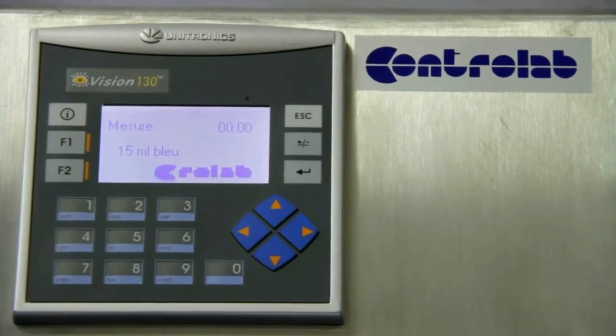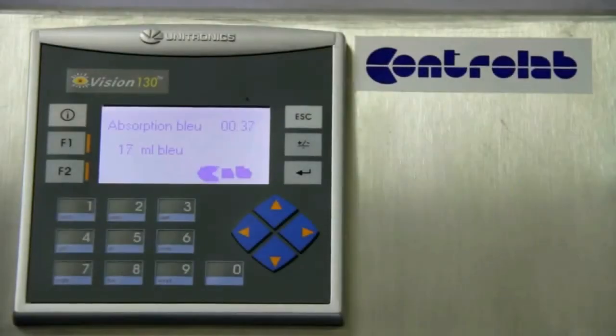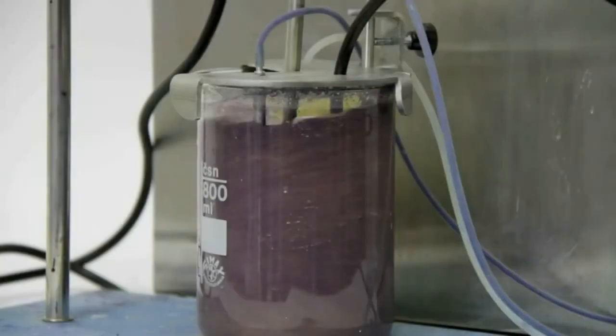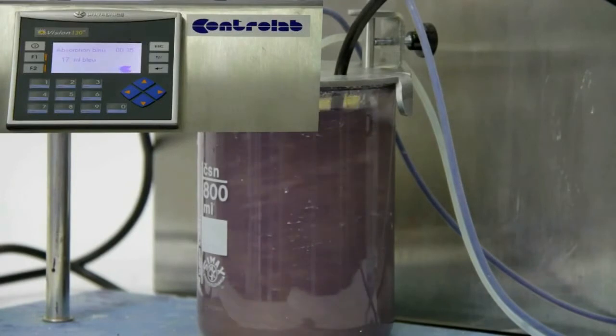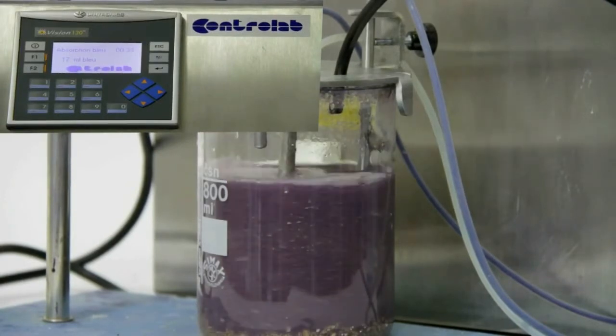According to the result of the analysis, the machine adds or does not add a certain amount of blue and repeats the stirring process. Then it starts with sedimentation and the analysis of the amount not absorbed by clays that are present in the sample.